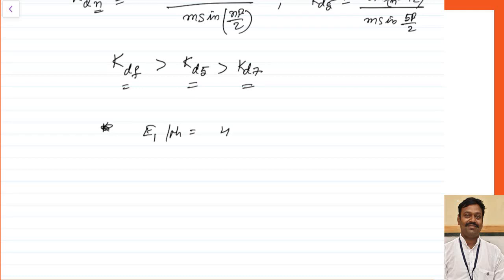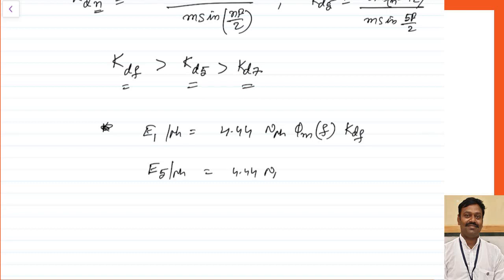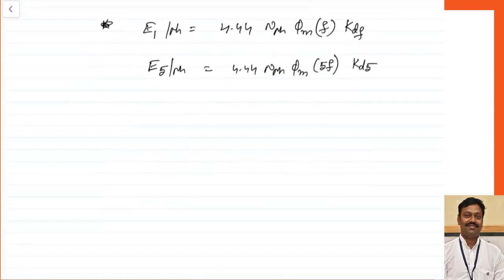EMF induced per phase for the fundamental component equals 4.44·N_phase·Φ_max·f·Kd. For the fifth harmonic, it will be 4.44·N_phase·Φ_max·5f·Kd5, and in a similar way we calculate for other harmonics.